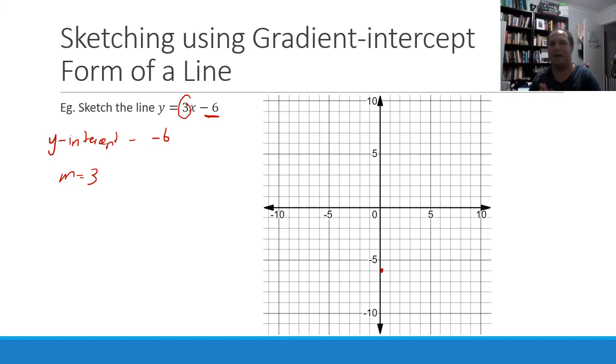Now, when we think about our gradient, that tells us if we move one square across in our x-direction, the gradient tells us how far upwards or downwards we move. So if our gradient is 3, for every one square we go across, we're going to go three squares up. One, two, and three. There's our second dot. With those two dots, we can draw our line. And there's the graph of our line y equals 3x minus 6.